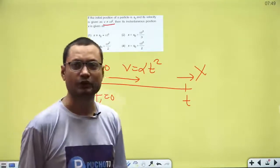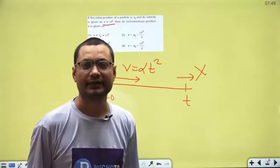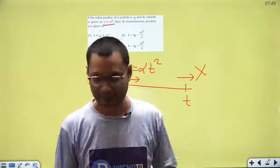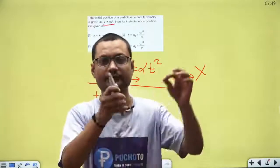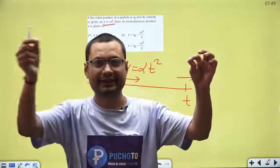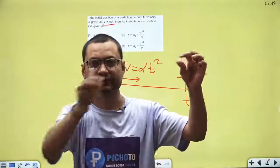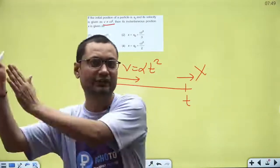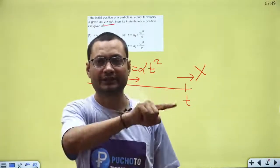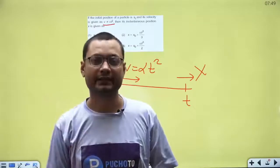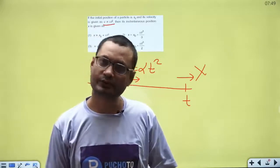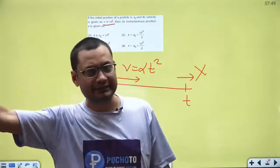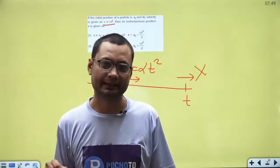भाई आपको position निकालनी है, velocity दी है — क्या करोगे? तो देखो एक simple सा funda: kinematics में तीन variables होते हैं — position x, velocity v, acceleration a। Position से velocity चाहिए हो तो differentiate करो: v = dx/dt। Velocity से acceleration चाहिए हो तो differentiate करो: a = dv/dt।